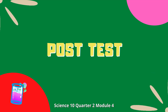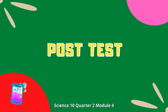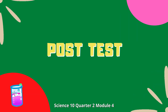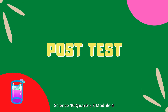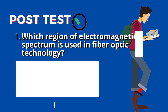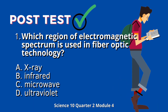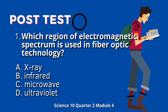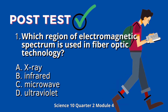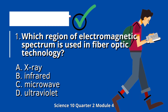Now let's move on to our post-test. Please prepare your pen and paper for your answers. You will be answering 10 items and choose the best answer from the options. Are you ready? Question 1: Which region of the electromagnetic spectrum is used in fiber optic technology? A. X-ray. B. Infrared. C. Microwave. D. Ultraviolet.